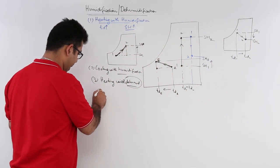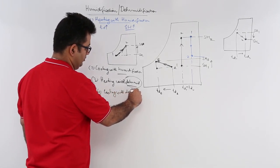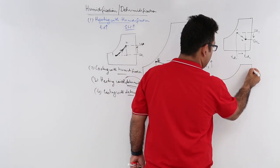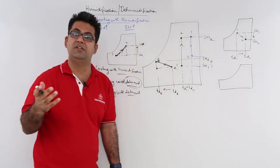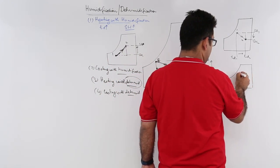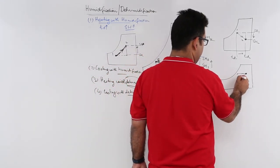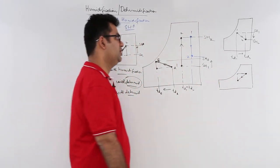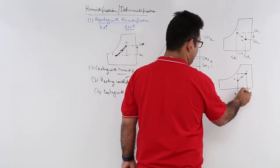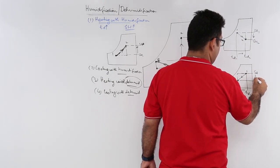The fourth process is cooling with dehumidification. On the chart, you start at state 1, you cool it so the DBT goes down to an intermediate point, and then you dehumidify it to reach state 2. So now both your dry bulb temperature and your specific humidity have decreased.